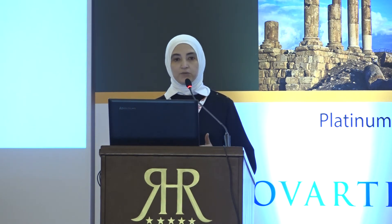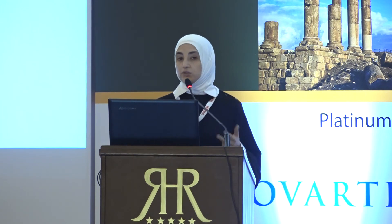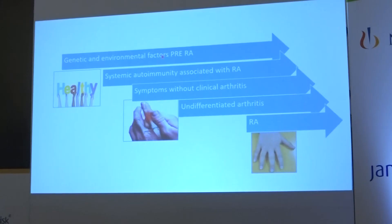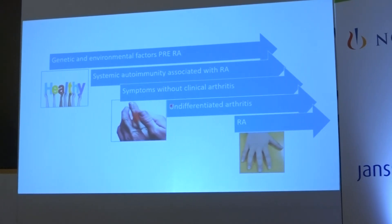Early treatment leads to better outcomes. Erosions can appear as soon as six to eight months after diagnosis, and if you don't treat in time, you lose the chance to preserve joint function. Rheumatoid arthritis goes through stages: genetic and environmental pre-rheumatoid stages, followed by autoimmunity, then arthralgia and undifferentiated arthritis, before progressing to full-blown rheumatoid arthritis.